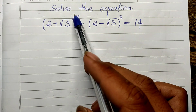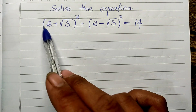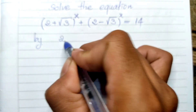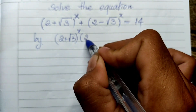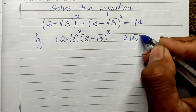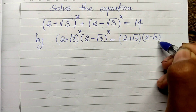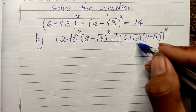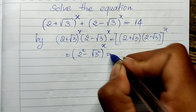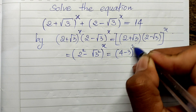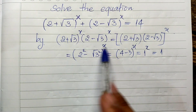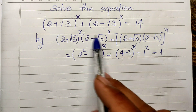We see our equation has the same exponent, but different bases: (2 plus square root of 3) and (2 minus square root of 3). Notice that (2 plus square root of 3) to the power 8 multiplied by (2 minus square root of 3) to the power 8 equals (2 plus square root of 3)(2 minus square root of 3) all to the power 8, which equals (4 minus 3) to the power 8, equal to 1 to the power 8, equal to 1. So these two parts multiplied together equal 1.